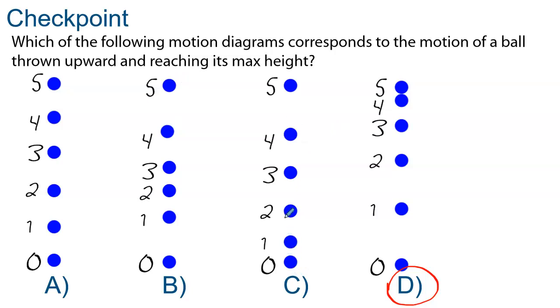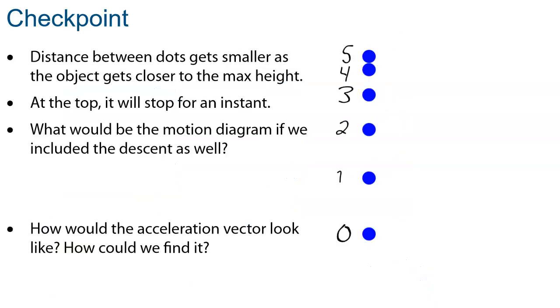The C is picking up speed as it moves up, so that's not what we're looking for. So really we want to use D. The distance between the points gets smaller and smaller as it moves up. And then at the top, if we were to continue, we would know that it stops for a moment. For one instance, the velocity would be zero. So we would see this by having maybe two dots really close to each other or on top of each other. What would be the motion diagram if we included the descent as well?